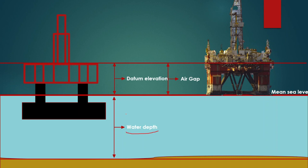Water depth is the distance from the seabed to Mean Sea Level, since the ocean surface is Mean Sea Level. It is important to calculate water depth during drilling and all related calculations. Datum elevation offshore is the distance from Mean Sea Level to the rig floor or RTKB — Rotary Table Kelly Bushing. The air gap is similarly the distance from Mean Sea Level to the rig floor. These are all the important elevations and datums needed in our calculations.